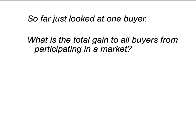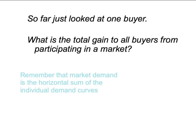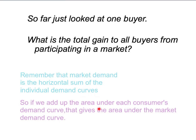But so far, we've just looked at the gains from trade for one buyer. How do we work out the total gains from trade to all buyers from participating in a market? In other words, how do we work out the total consumer surplus from a market? Well, the first thing we need to remember is that the market demand curve is just a horizontal sum of the individual demand curves.